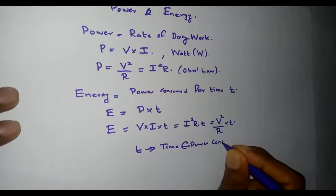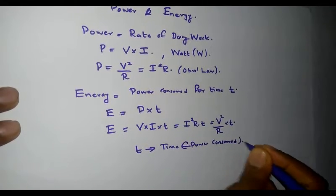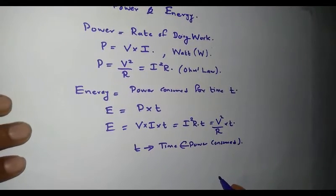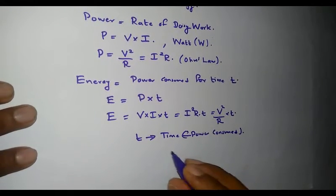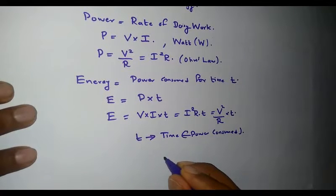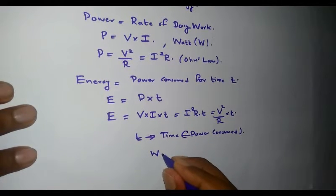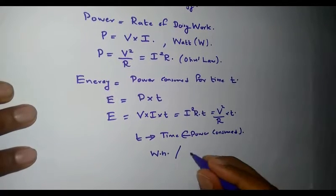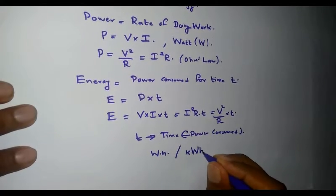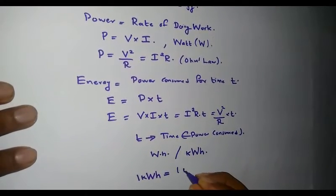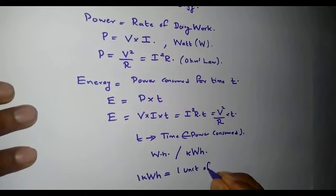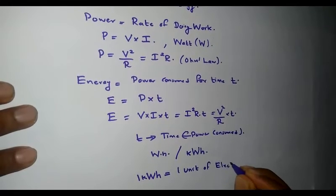The unit of energy can be represented as the unit of power times the unit of time, that is watt hour, or it can also be represented as kilowatt hours. One kilowatt hour is considered as one unit of electricity.